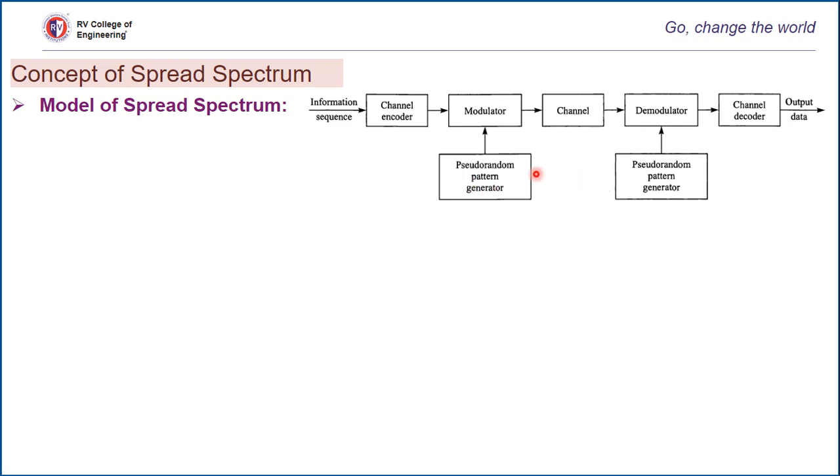A digital communication system with a binary information sequence at its input at the transmitting end and its output at the receiving end. The channel encoder and decoder and the modulator and demodulator are basic elements of the system which were treated earlier.